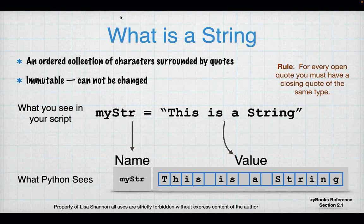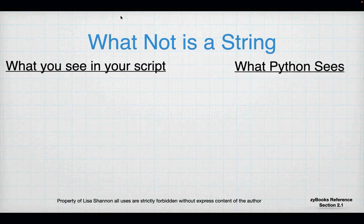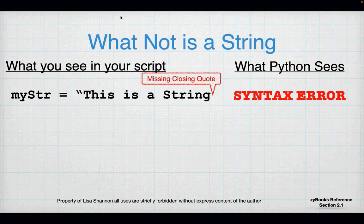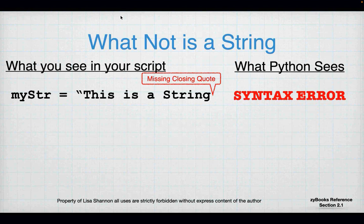Rule: for every open quote, you must have a closing quote of the same type. Python allows you to use single quotes or double quotes to create a string, but you cannot open a string with a double quote and close it with a single quote — Python will give you an error. These are common mistakes that students make, and they get frustrated because programming is about nitpicking. I want to help students understand when they're getting weird syntax errors what's happening.